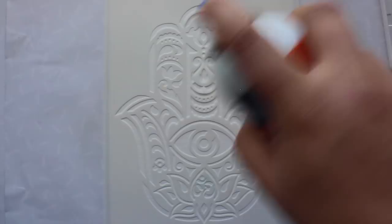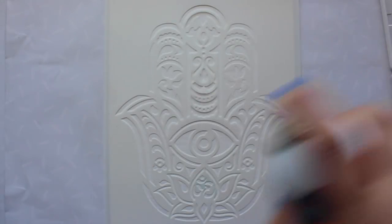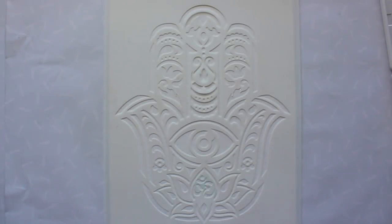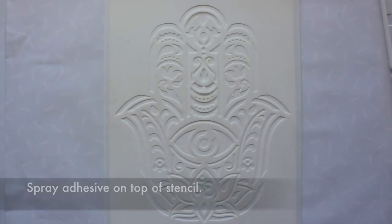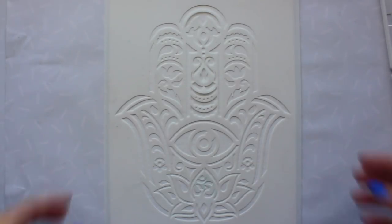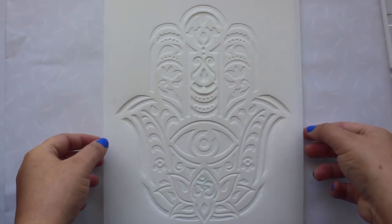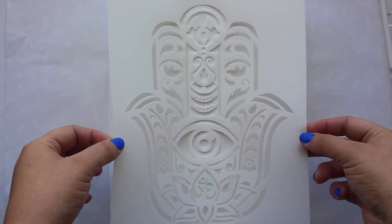Lay the stencil over a piece of heavyweight paper such as watercolor paper or mat board. Spray over the top of the stencil lightly but thoroughly. Immediately remove the stencil, lifting straight up. Allow to dry completely before moving on to the next step.